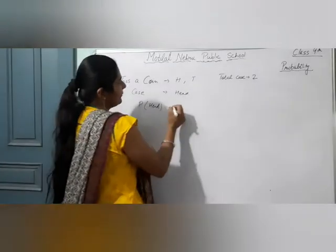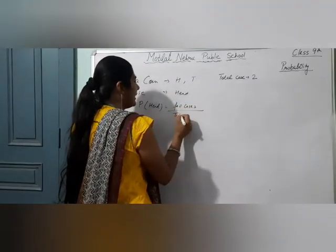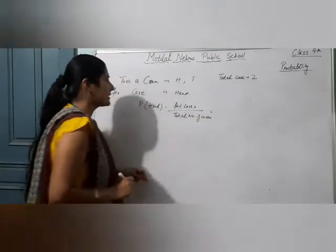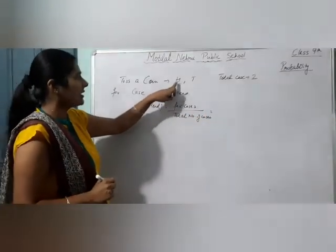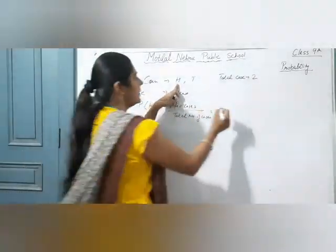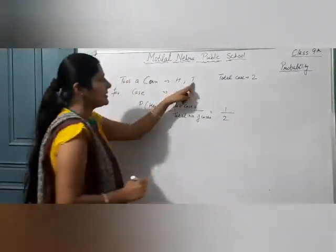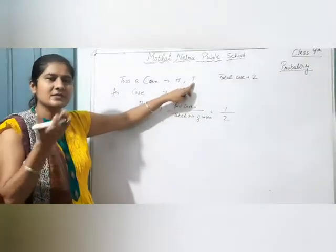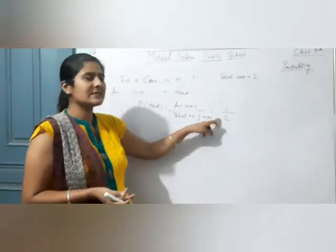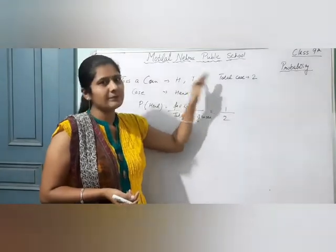तो probability क्या है मेरे जीतने की? What is the probability of head? तो probability का main formula क्या होता है? Favorable cases by total number of cases. जैसे मेरे पास head आने के कितने chance हैं — एक ही बार head आएगा, total cases में से. और total cases कितने हैं? Two. तो 50-50% chances हैं — 50% का मतलब 1 by 2 होता है. तो 1 by 2 का मतलब 50%, half chances है head आएगा और half chances है tail आएगा.